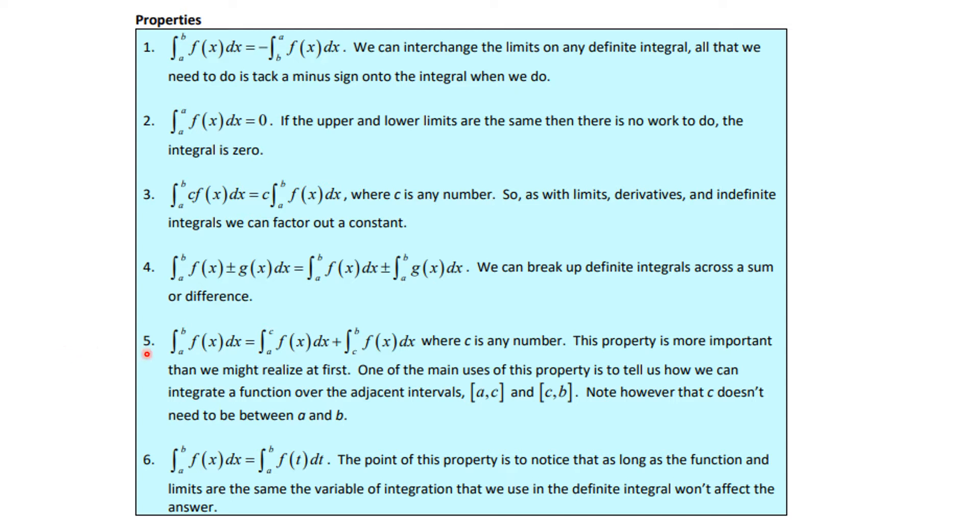Number five is a little more complicated. The integral from a to b of f(x)dx is equal to the integral from a to c of f(x)dx plus the integral from c to b of f(x)dx, where c is any number. This makes sense when you think about this from an area context if c is between a and b, but it's also true whether c is between a and b or not. It's more important than you might realize because it helps us integrate a function over adjacent intervals. Make note of these properties because I'll ask you about these later.